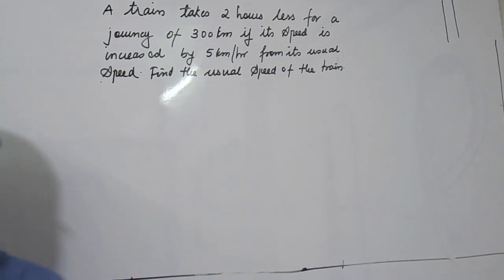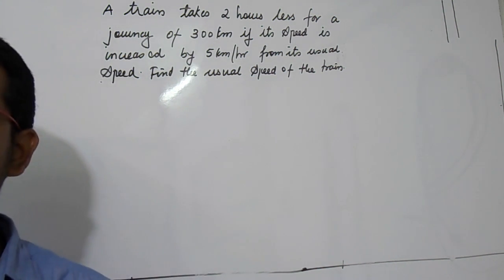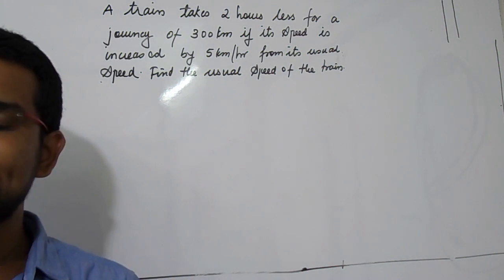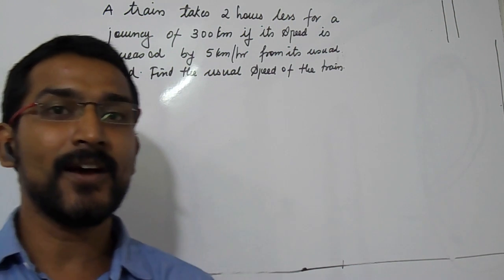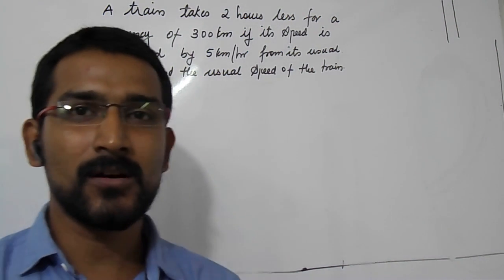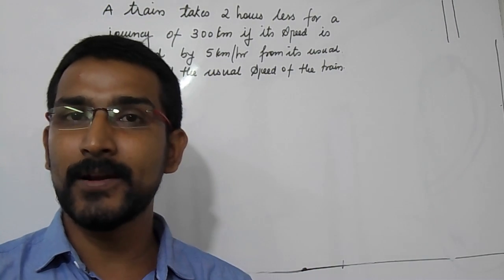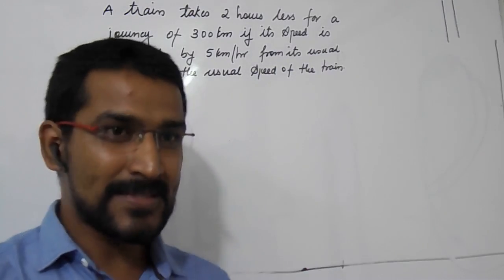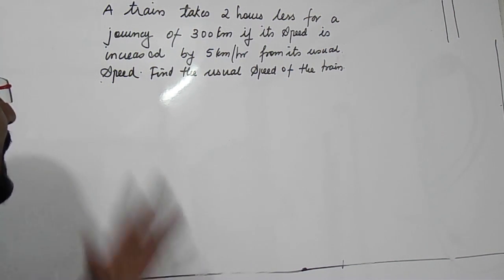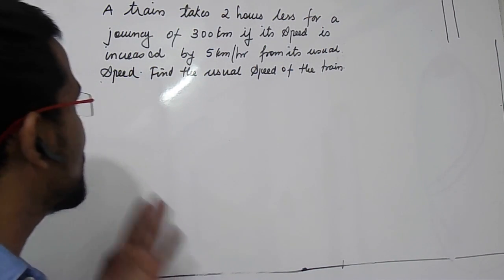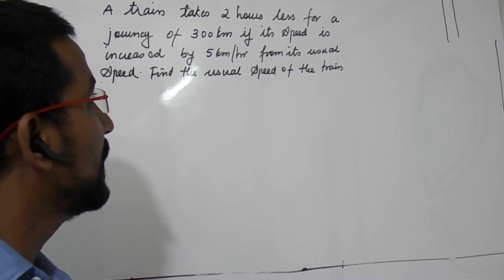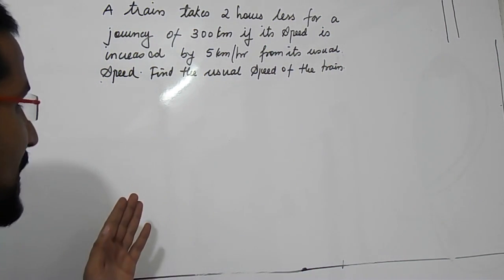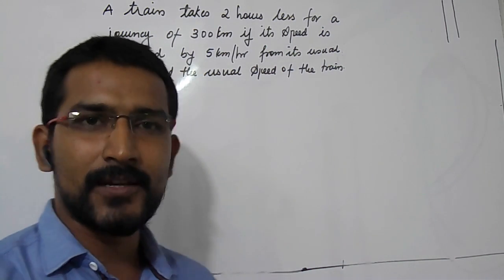In the last two sessions we took word problems on quadratic equations based on two-digit numbers. Now in this session we are going to take another example — how to find the speed of a train if the distance and time relation is given. It is given that a train takes 2 hours less for a journey of 300 km if its speed is increased by 5 km per hour from its usual speed. Find the usual speed of the train.